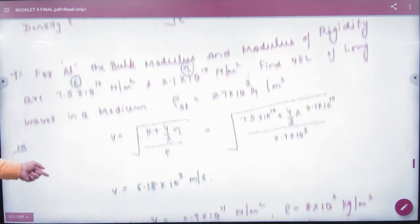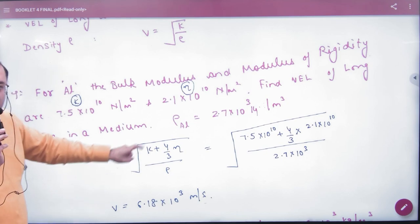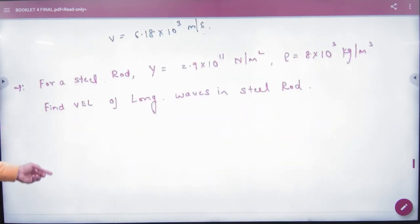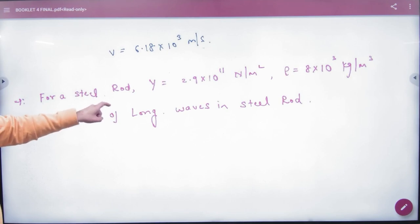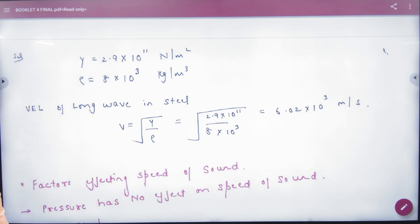Longitudinal wave motion mein, jaise pehla question mein, ab formula change hoga. Longitudinal ka check karo: aluminium ke andar bulk modulus K given hai, eta given hai, velocity nikaal lo longitudinal. K ki formula hai jis mein K bhi use ho rahe hai aur eta bhi use ho rahe hai, formula hai, put karo, answer aa gaya. Aur koi formula hi nahi hai K aur eta ka. Jaise steel rod, underline karo, steel rod. Steel rod ka Y pata hai aur rho pata hai. Steel rod ka Y pata hai aur rho pata hai. Steel rod ka Y pata hai and under root of Y by rho answer aa gaya.